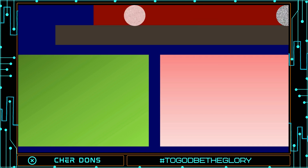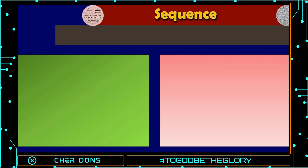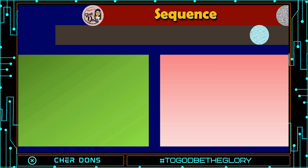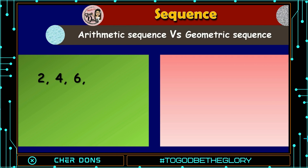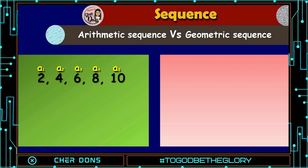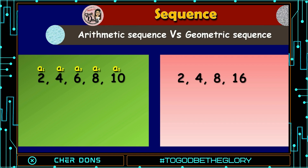Let's take a closer look: arithmetic sequence versus geometric sequence. First sequence: 2, 4, 6, 8, and 10. Second sequence: 2, 4, 8, 16, and 32.